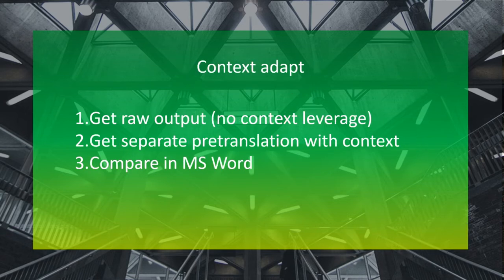First, I wanted to test the context adapting feature. This is supposed to check your whole document and remember the context to adapt the modern MT output to the document. To test it, I pre-translated the text in a manner to make sure the adaptive features would be turned off — I connected only the API and did not use the dedicated modern MT connector. That gave me the raw output. Next, I pre-translated the same document using the dedicated modern MT connector in SDL Trados, with the goal of leveraging only the context feature. Then, comparing the two docs with Track Changes in Microsoft Word enables seeing the differences.